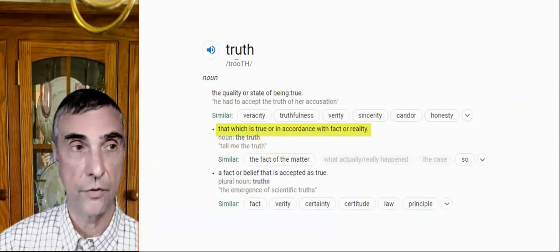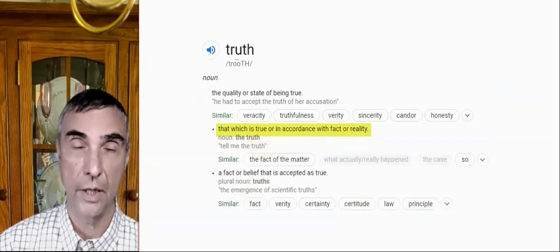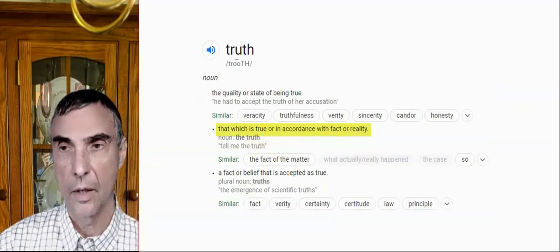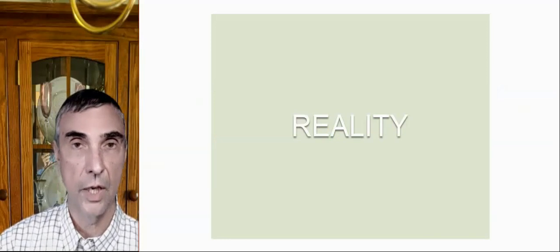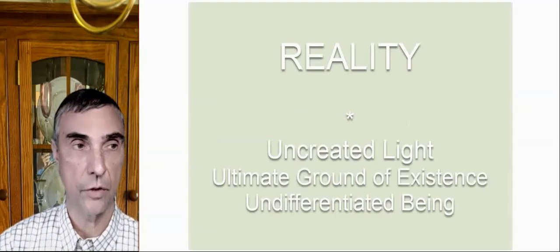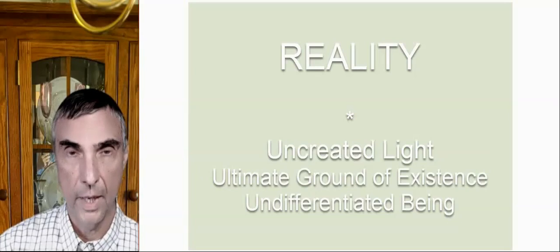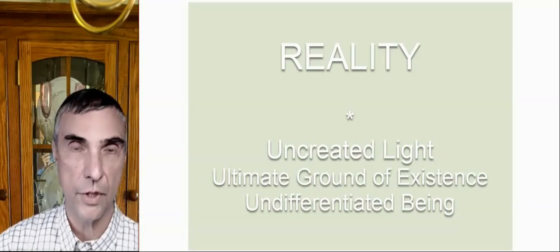But another definition of truth is that which is in accordance with reality or fact. Suppose we have reality. For us, ultimate reality is uncreated light, ultimate ground of existence, undifferentiated being.